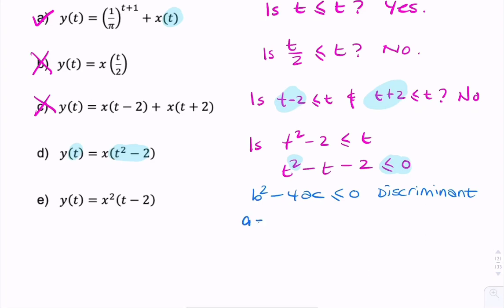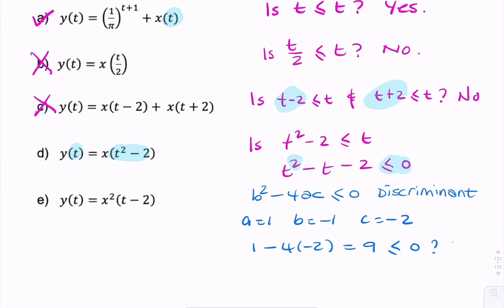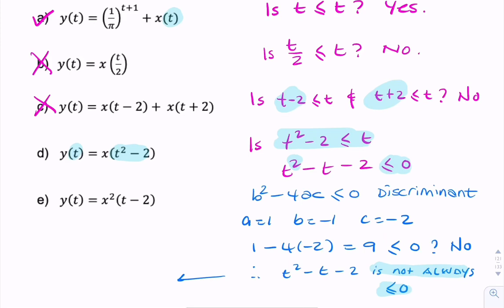Here we have a equals 1, b equals minus 1, and c equals minus 2. So b squared minus 4ac would be 1 minus 4 times minus 2, which is 9. Is 9 less than or equal to 0? No. Therefore, t squared minus t minus 2 is not always less than or equal to 0. Because it's not always less than or equal to 0, this condition isn't always true, and therefore we conclude the system is non-causal.